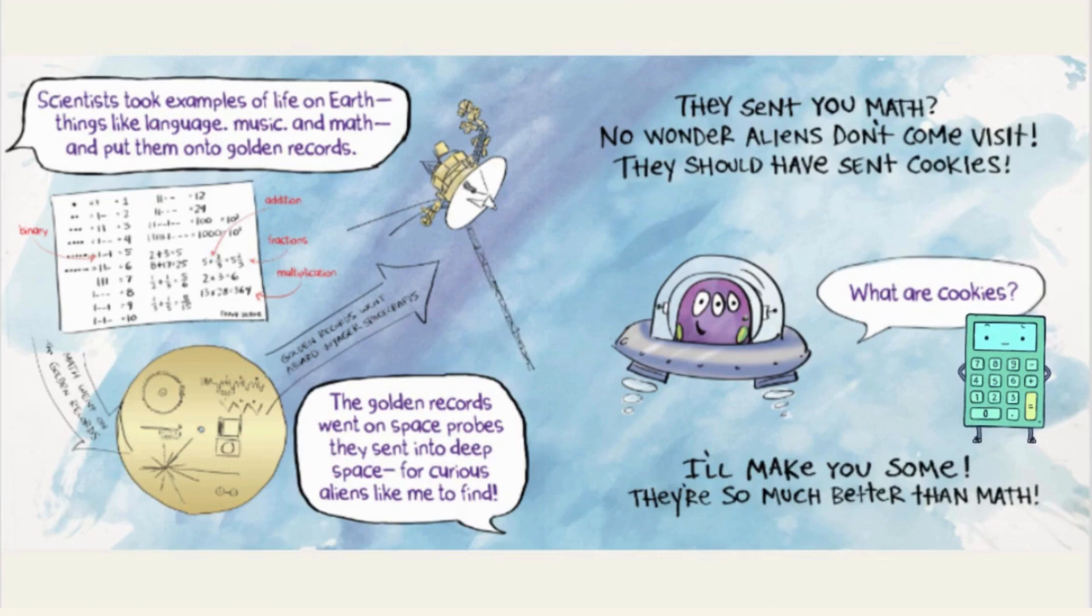Scientists took examples of life on Earth, things like language, music, and math, and put them onto golden records. The golden records went on space probes they sent into deep space for curious aliens like me to find.